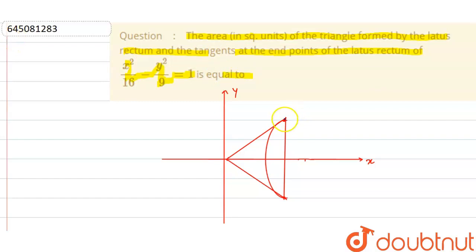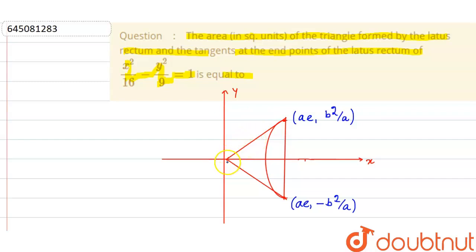The latus rectum has endpoints at (a, b²/a) and (a, −b²/a). The tangents at the endpoints of the latus rectum will intersect at the point where the directrix meets the axis, which means that intersection point is (a/e, 0). This is a key result we need to remember before solving.